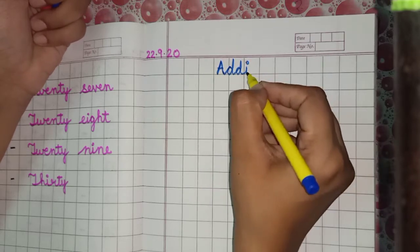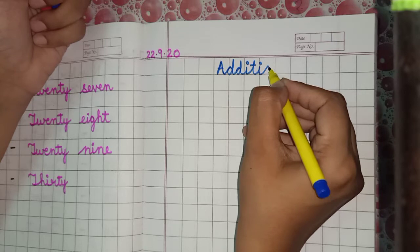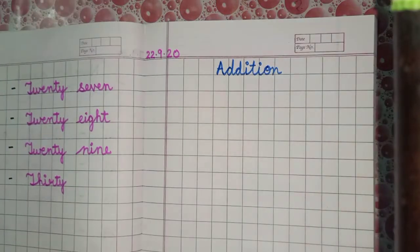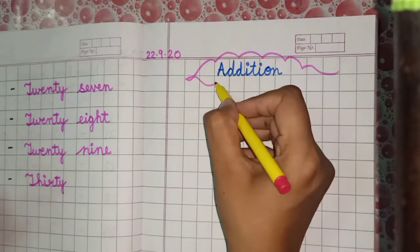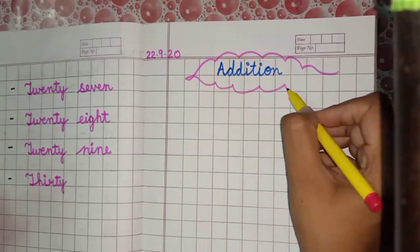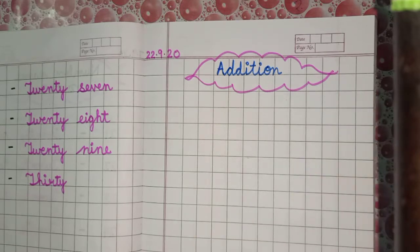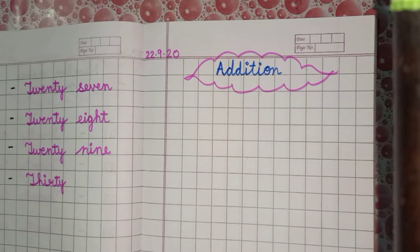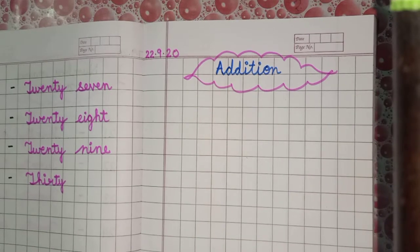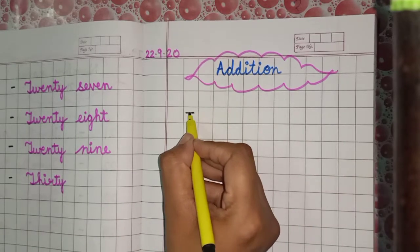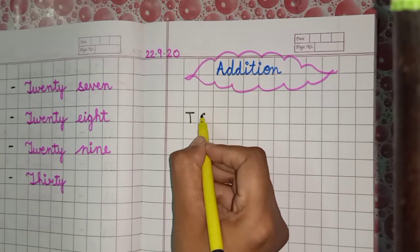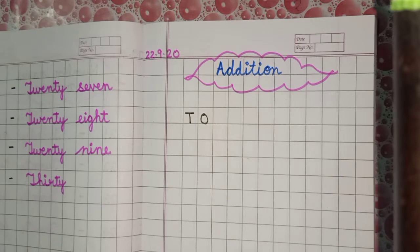Edition — Addition. Yesterday we did addition in the book; today we will practice it in the notebook. Understand? Now leave one line and write here: tens and ones.